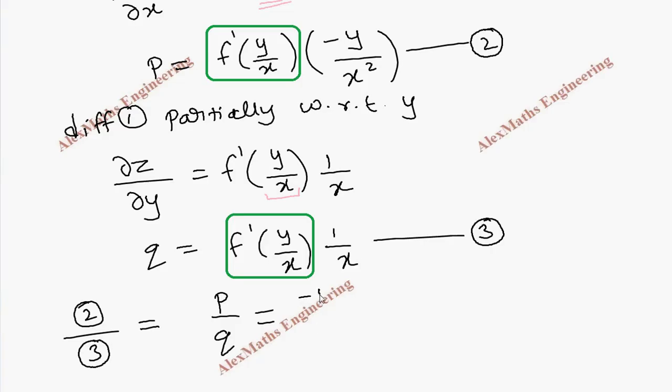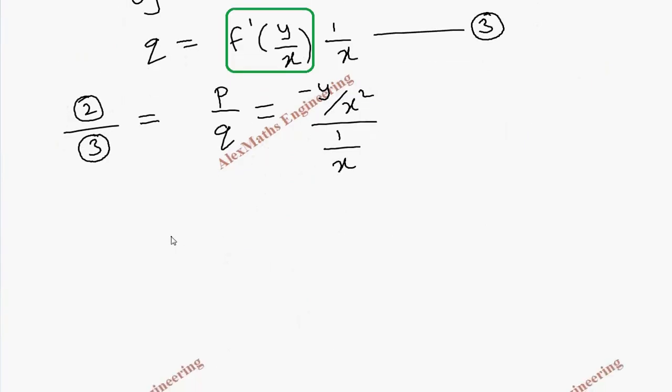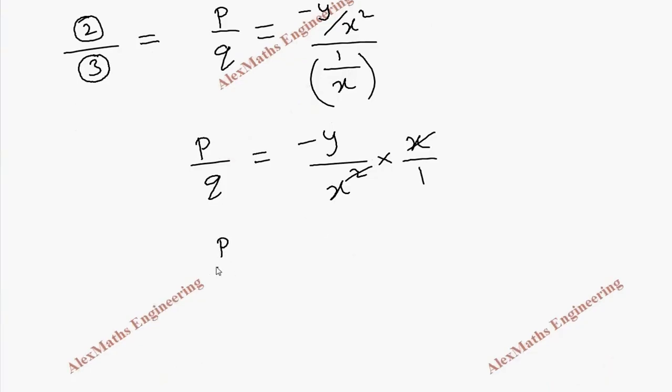The remaining is (-y/x²) ÷ (1/x). Further rearranging: p/q = -y/x², and this denominator term will be multiplied in the numerator by its reciprocal, that is x. We can cancel x², and after that we have p/q = -y/x.